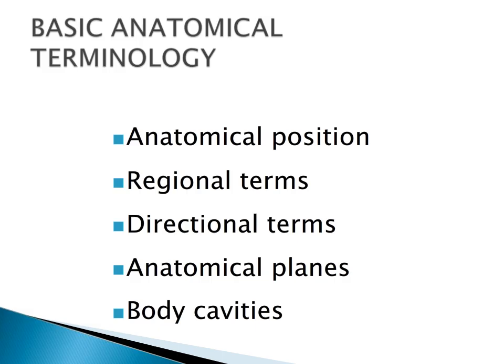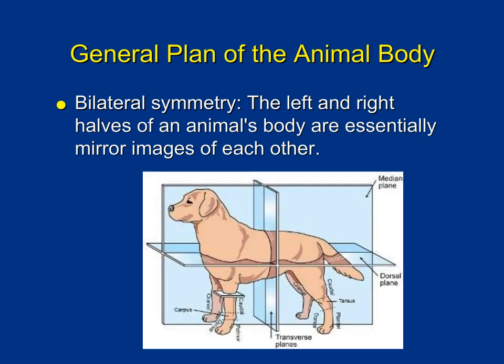We're now going to shift gears and talk about basic anatomical terminology. It's important to understand this terminology to do well in the laboratory portion of this course and to understand what the veterinarian is saying in the exam room and surgical suite. Today we're going to cover the standard anatomical position, regional terms used for cats, dogs, and horses, specific directional terms, anatomical planes of sectioning, and the different body cavities.